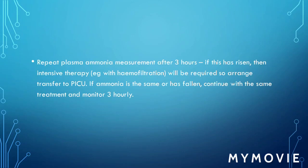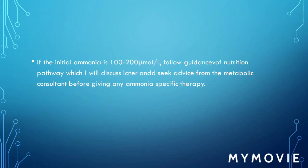If repeat ammonia is more than 200, give loading doses of sodium phenylbutyrate, sodium benzoate, arginine, and carnitine, followed by continuous infusion. If initial plasma ammonia is more than 500, or more than 300 with encephalopathy, transfer immediately to PICU, as this child is a candidate for ventilation and haemofiltration.